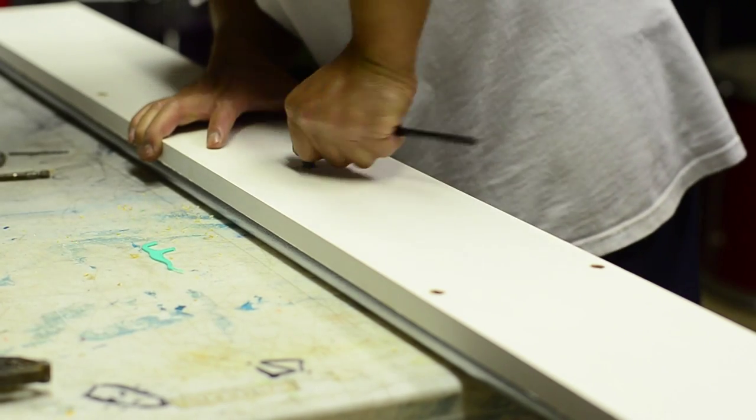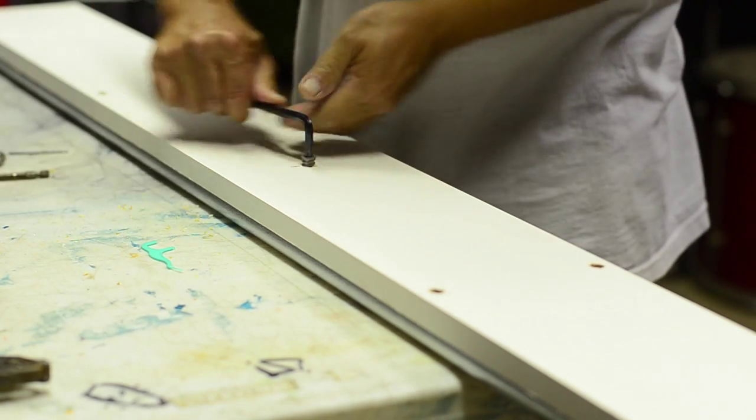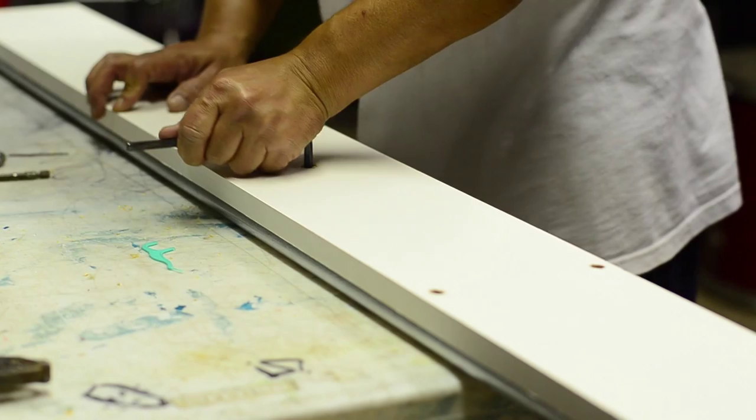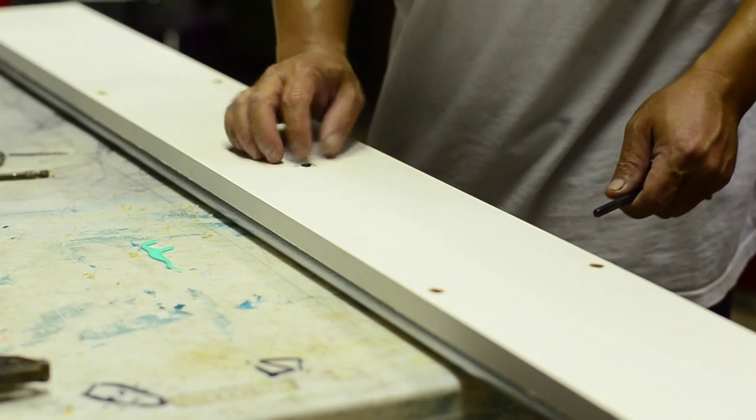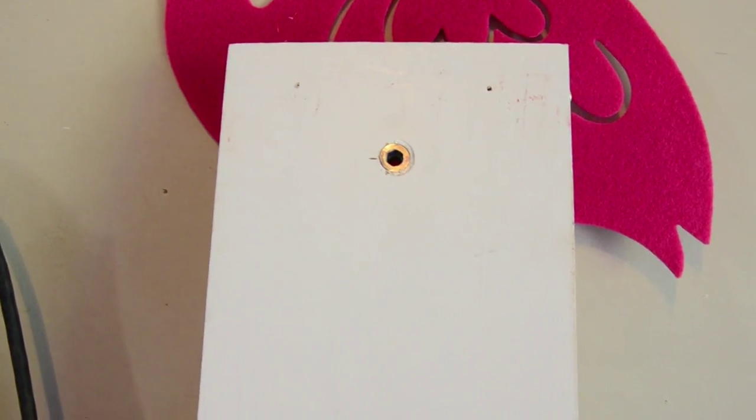I'm putting them in three different locations: one on each end and one in the center. Here it is with my countersunk screws flushed.